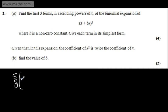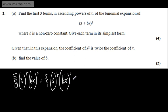So what we'll have is 5c0, we'll have 3 to the power of 5 multiplied by bx to the power of 0 plus 5c1 multiplied by 3 to the power of 4 multiplied by bx to the power of 1 plus 5c2, we'll have 3 to the power of 3 multiplied by bx to the power of 2.